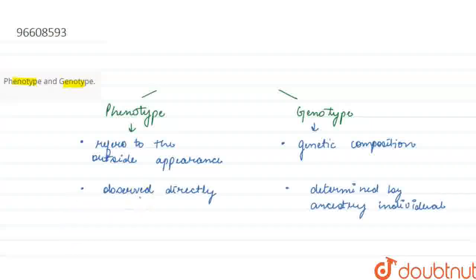For phenotype, if an individual is resembling another individual, that doesn't mean that the genetic constitution might be similar. But if an individual is possessing the same genotype, that definitely means they must be having a similar phenotypic constitution.